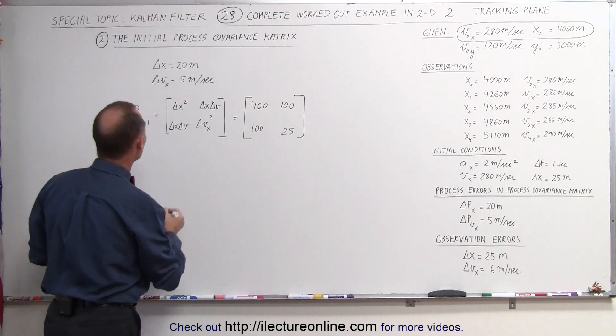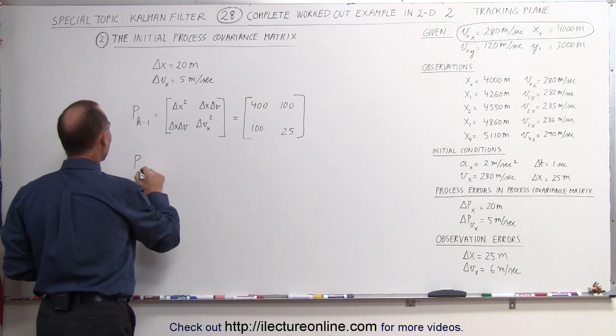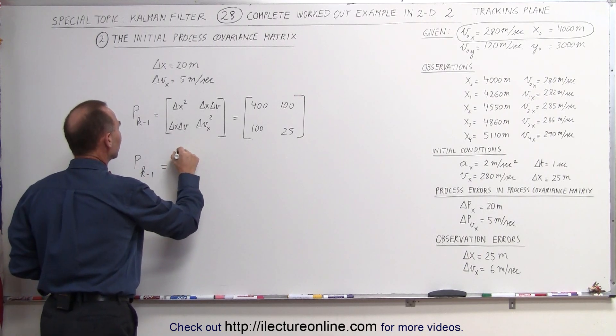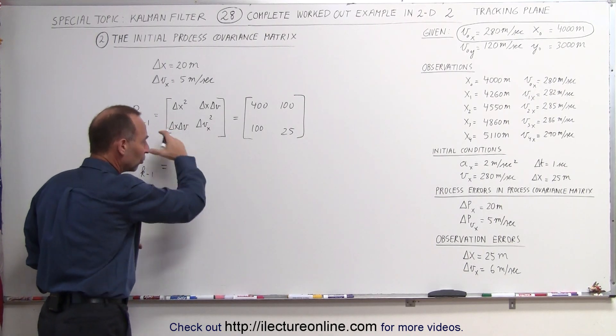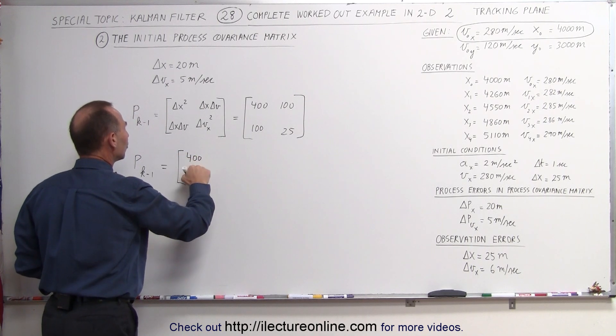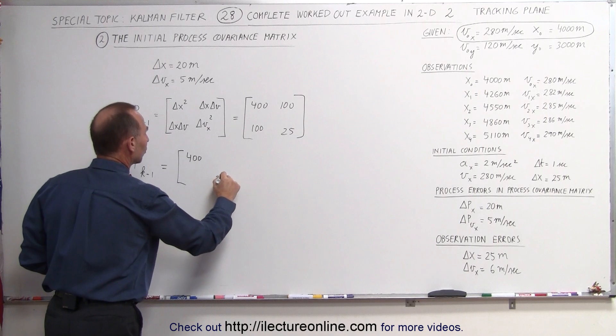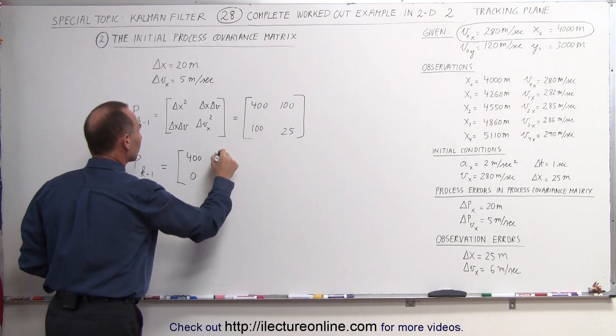We can go ahead and make those zeros. Ultimately, the previous process covariance matrix now becomes equal to just the terms along the diagonal, which is the position squared on this element and the velocity squared on this element, with zeros on the off-diagonal terms.